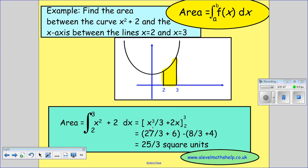So we substitute 3 into this, so that gives you 27 over 3 plus 2 times 3 gives you 6. And then take away, substituting 2 in, 2 cubed over 3 plus 2 times 2, which is 4.